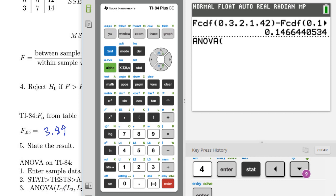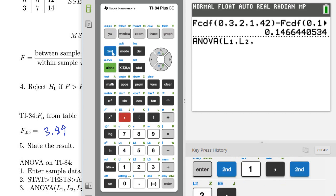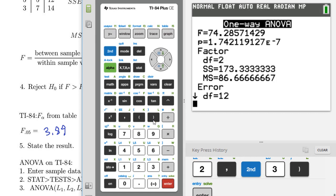And then you have to list list one, comma, list two, comma, list three. So this will be the second function of one, comma, second function two, comma, second function three, close parentheses, enter.